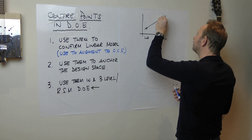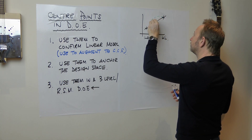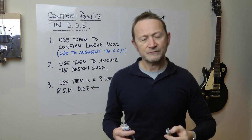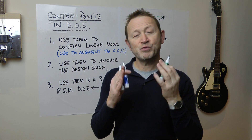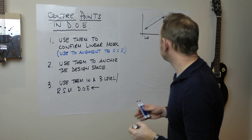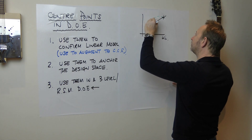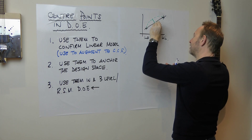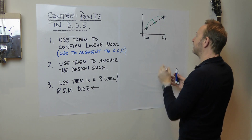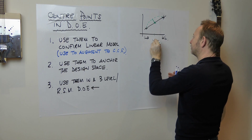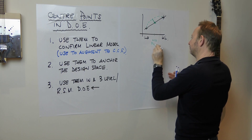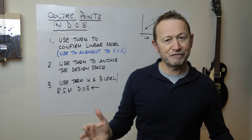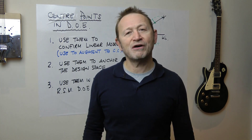If the model is really a curve, what we want to do is pick up that curvature. The weakest place for this model is in the middle. So if we can do a test at the midpoint — which of course is the centre point of the design space — we can detect that curvature.